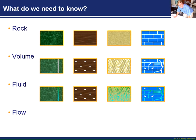So, we've covered the rock type, the volume, and the fluid types. And we've sort of touched on a couple of occasions on the permeability story, the ability of the rock to flow.